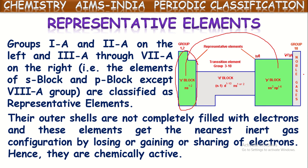For noble gases, the outermost shell is completely filled. But for all remaining S block and P block elements, the outermost shells are incomplete. So these elements try to complete their outermost shells — either by gaining electrons, losing electrons, or sharing electrons. That is why these elements are more reactive and always ready to participate in chemical reactions, being responsible for most chemical reactions. That is why they are especially called representative elements.